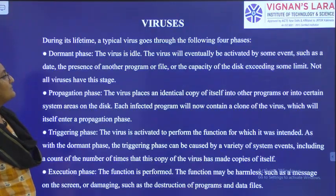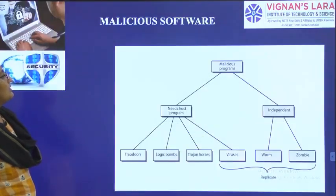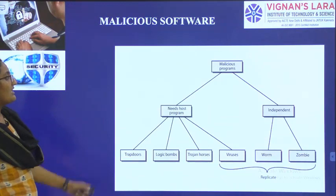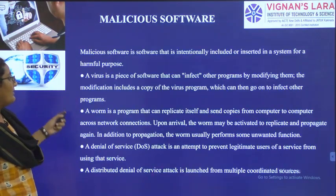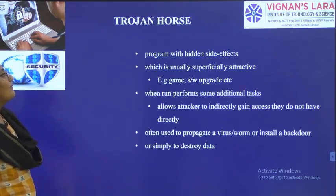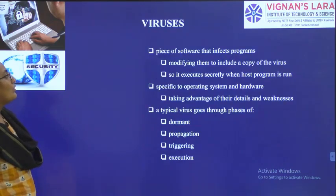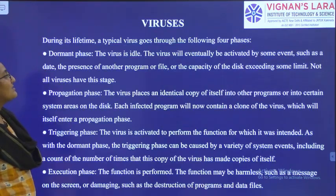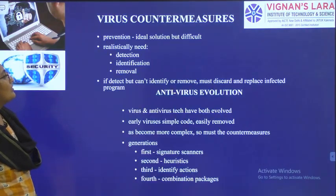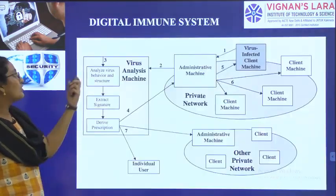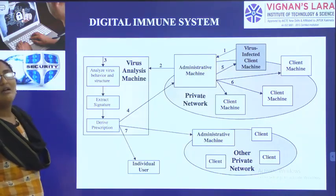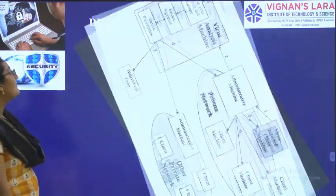So far we have seen: what is malicious software, types of malicious software, definitions for virus and worm, logic bomb, Trojan horse, trapdoor, virus, phases of virus, types of virus, virus structure, countermeasures for virus, and digital immune system as one countermeasure.